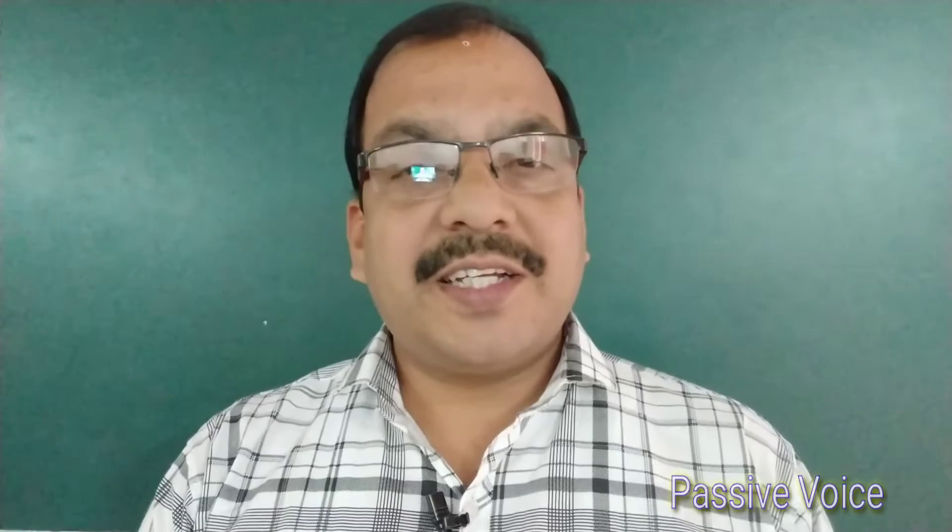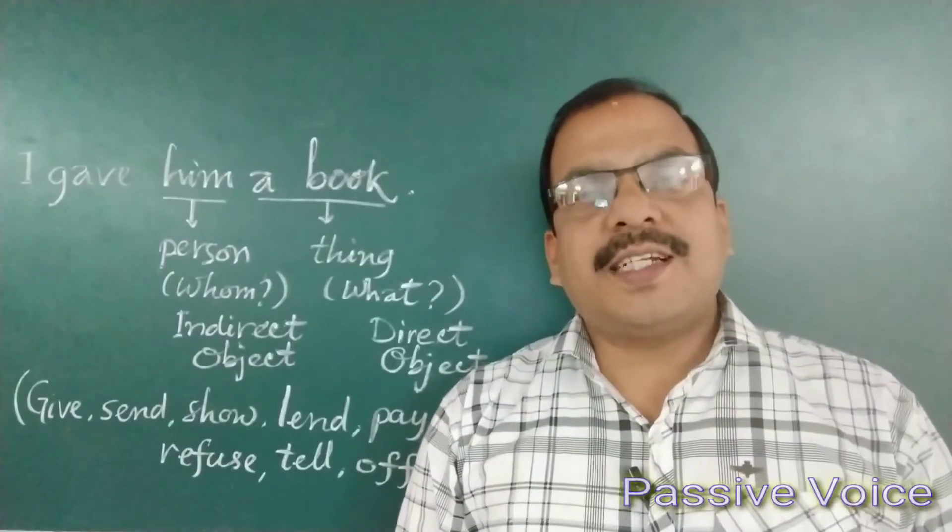Remember, my dear friends, there is no passive structure for the present perfect progressive ('I have been writing'), the past perfect progressive ('I had been writing'), the future progressive ('I shall be writing'), or the future perfect progressive ('I shall have been writing'). Usually we do not use the passive form of these structures.